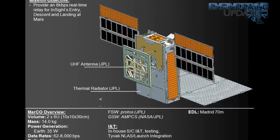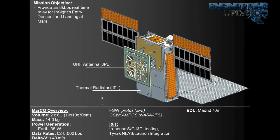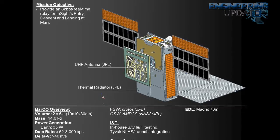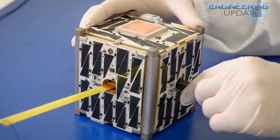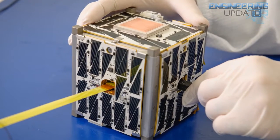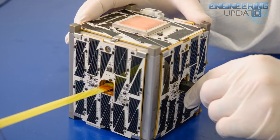After launch, the CubeSats will separate from the Atlas V booster, deploy two solar panels and two radio antennas, and travel to the Red Planet by themselves. While InSight is landing on September 28, 2016, to begin its mission of understanding the interior structure of Mars, MARCO will fly by the Red Planet.